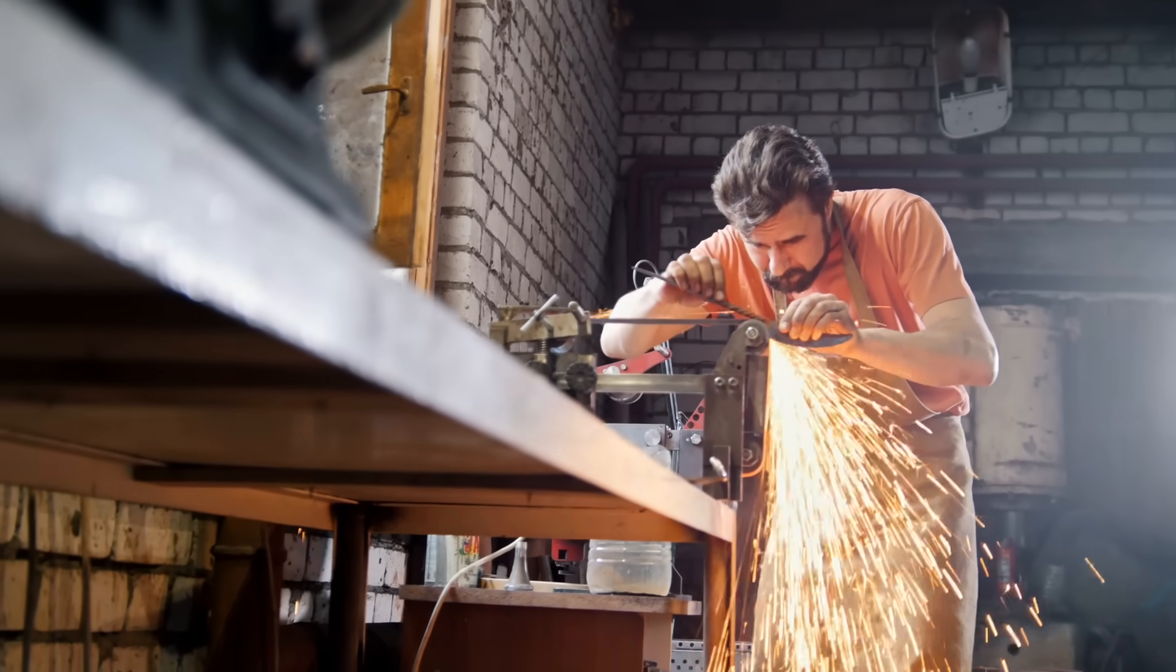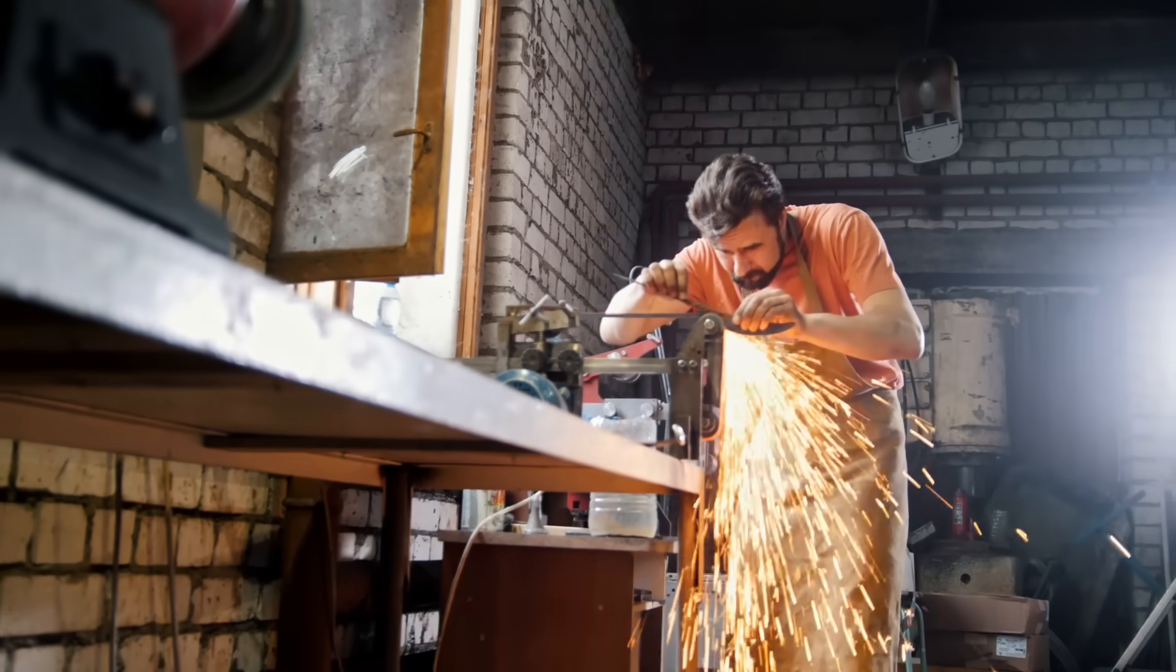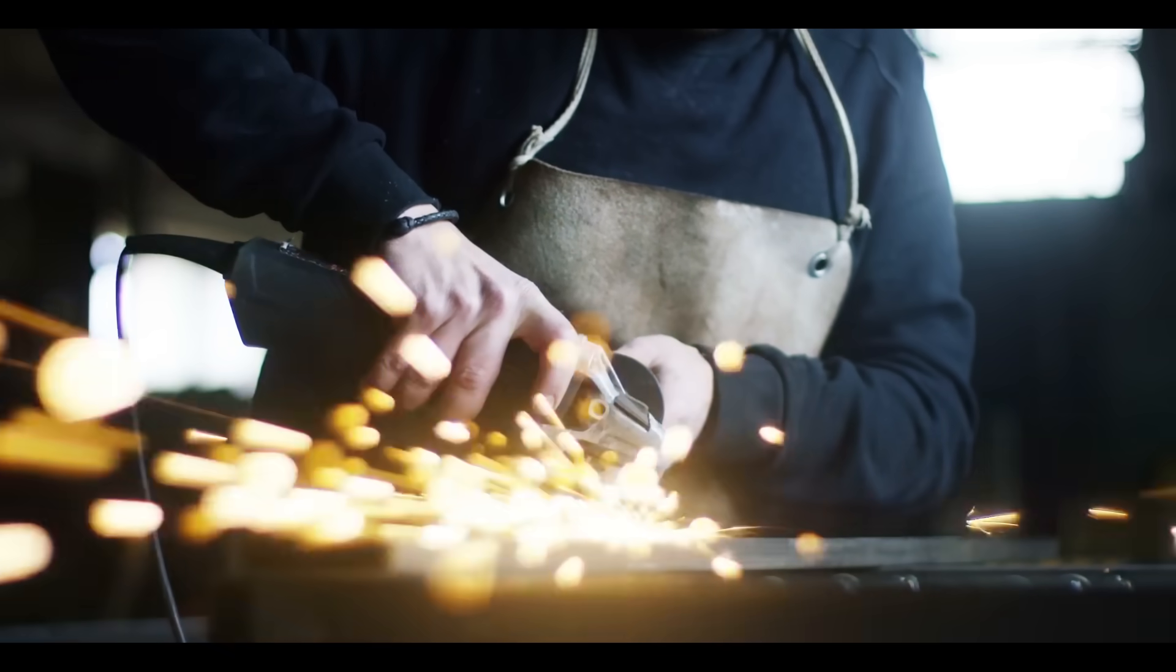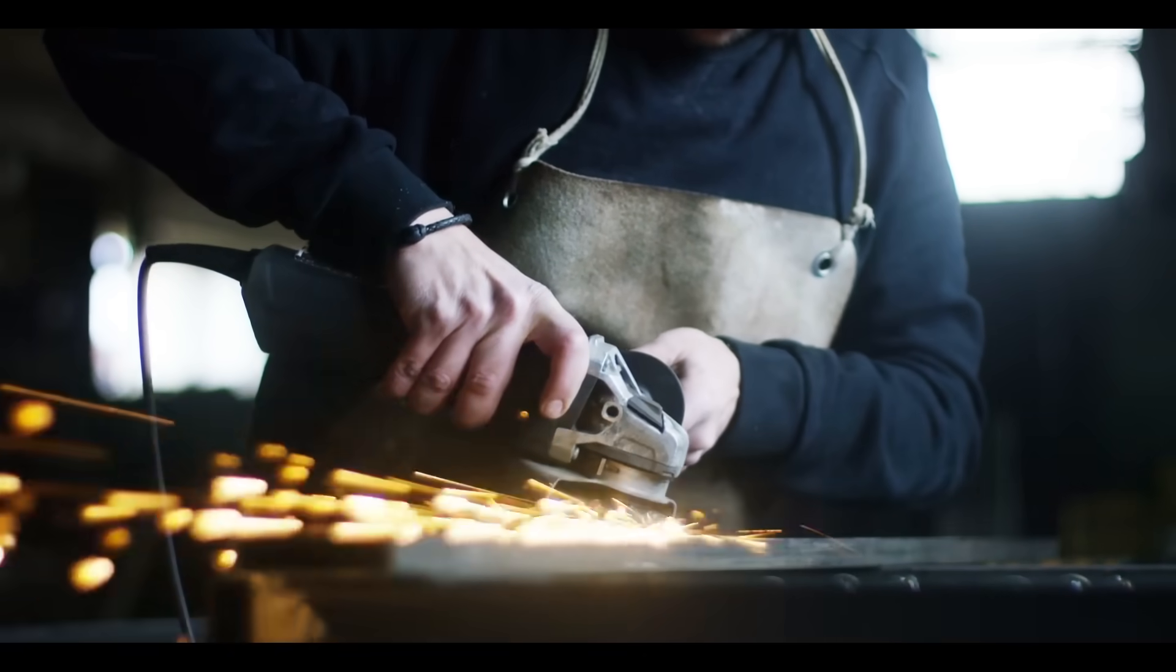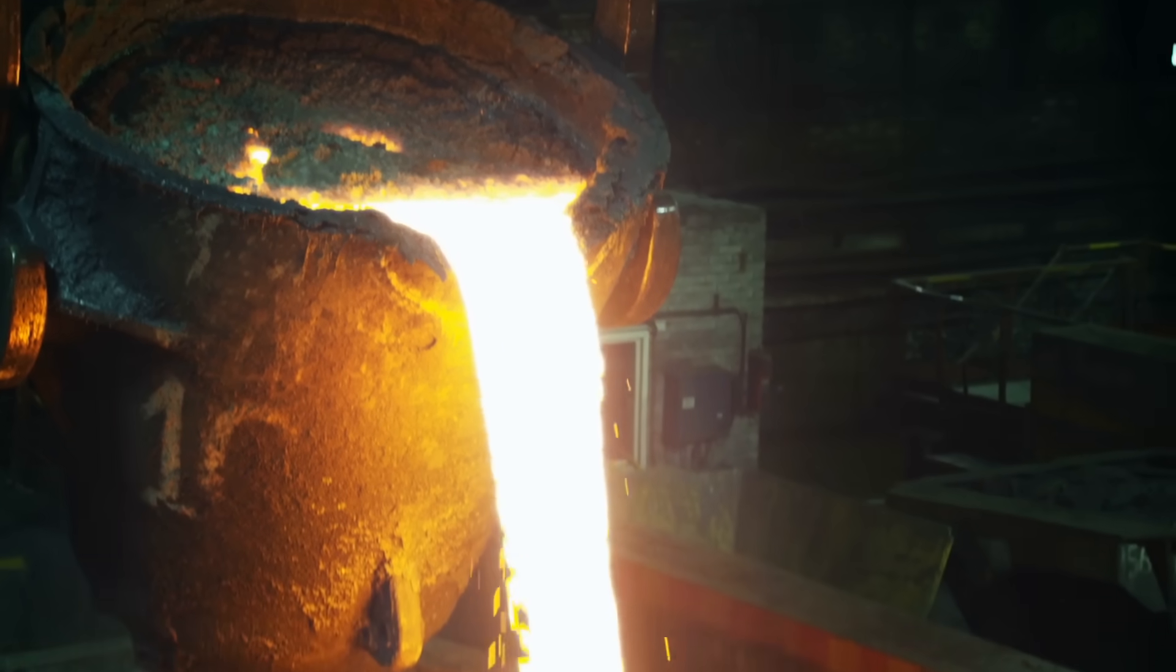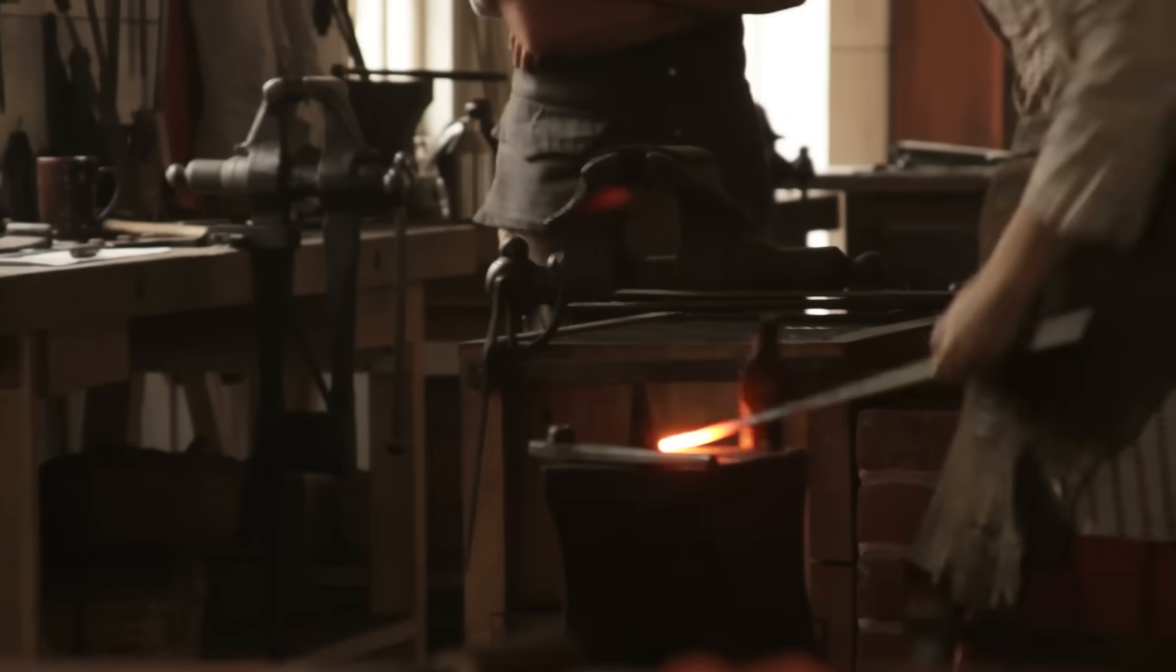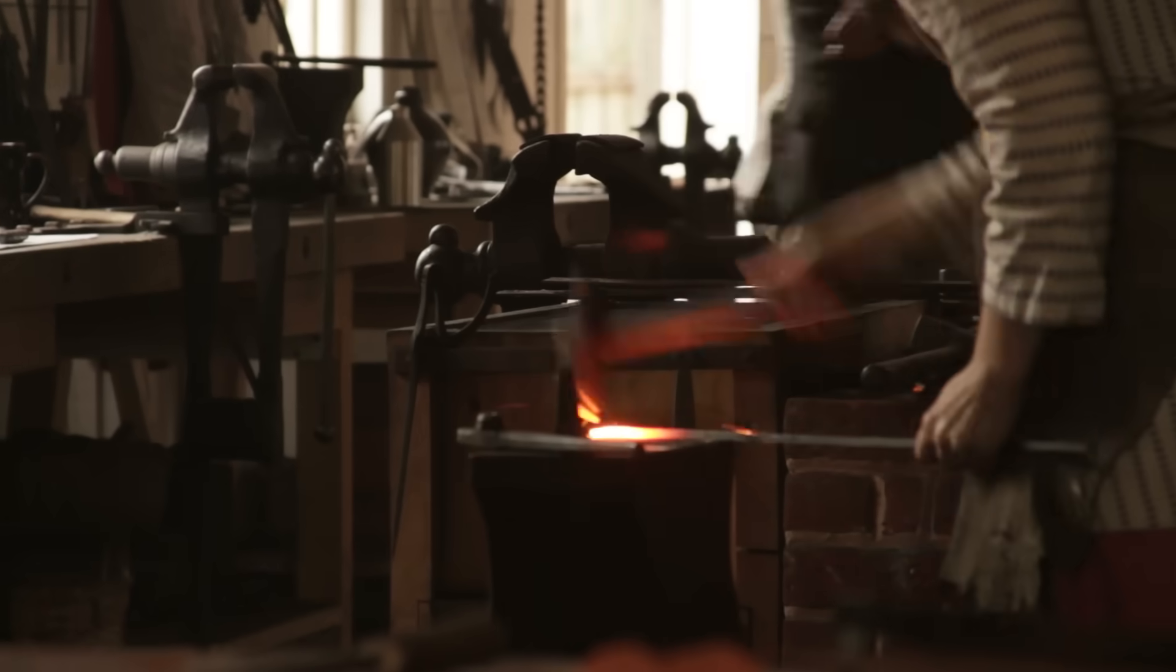We have thousands of years of experience, mostly through trial and error, of learning how manufacturing techniques affect the material properties of the metals we use, from learning how to tailor carbon content during iron ore smelting to learning how each hammer blow can affect the crystalline structure of the metal.